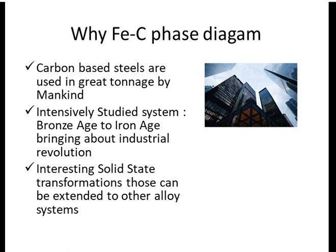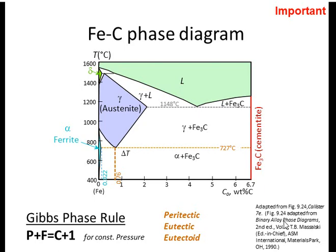Furthermore, no other alloy system has been studied in such detail as the iron–iron carbide system. Going from the Bronze Age to the Iron Age brought about the industrial revolution, and researchers have been intrigued by the solid-state phase changes in steel, which are varied and very interesting. These systems can also be applied to understand other alloy systems. Looking at the iron carbon phase diagram, the region from 0 to around 2% carbon is where we talk about steels.